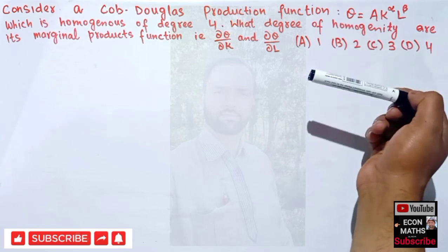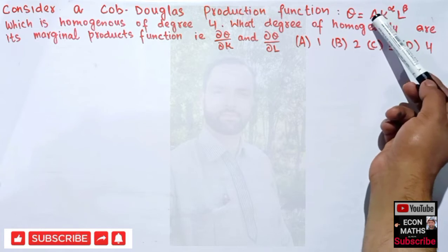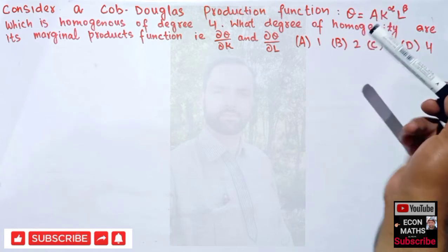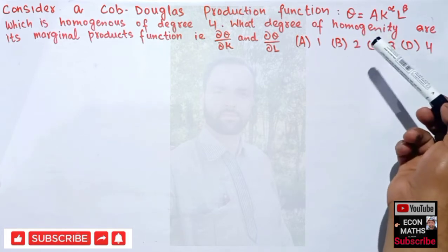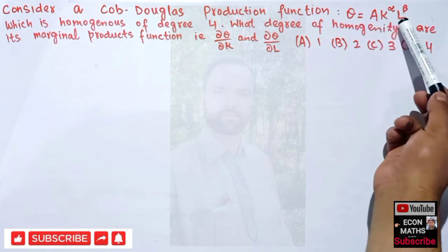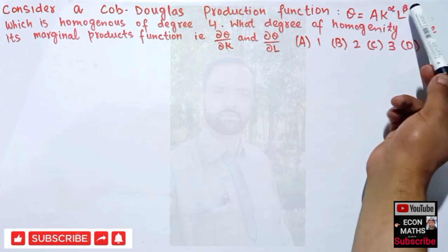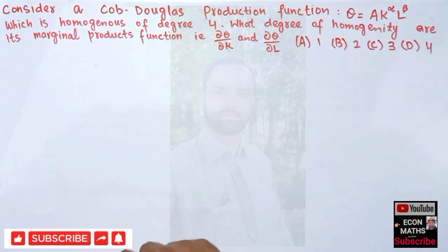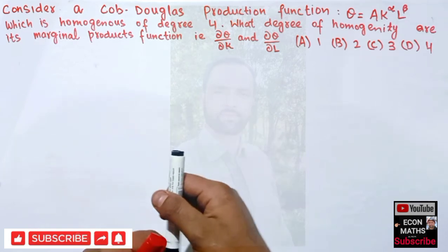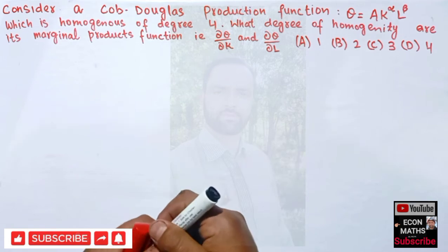Q is the output, a is the technological efficiency — it shows the level or state of technology; the higher the value of a, the more efficient the production function is. K is the capital, L is the labor, and alpha and beta show the capital and labor shares respectively. I have made a separate playlist on production functions, so I will not go into detail here.